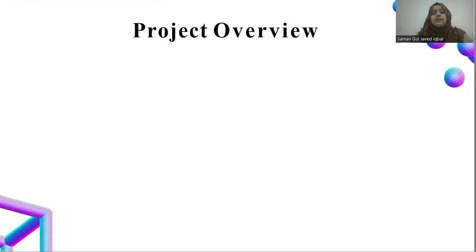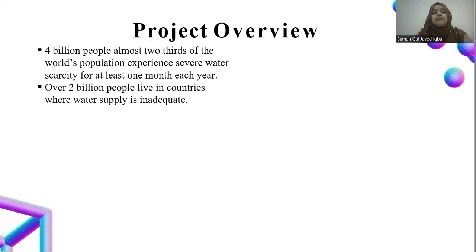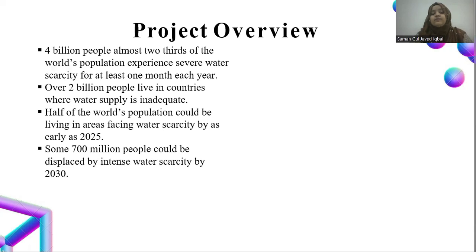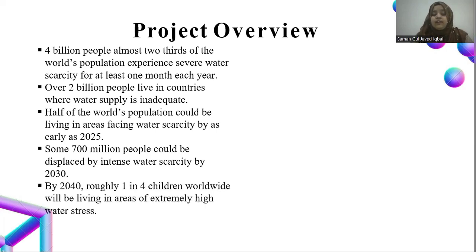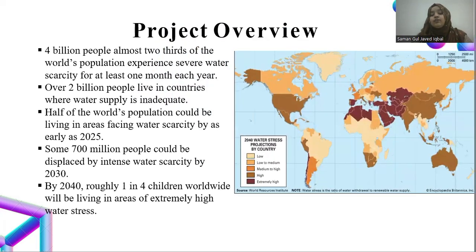Let's begin with the project overview. 4 billion people — almost two-thirds of the world population — experience severe water scarcity for at least one month each year. Over 2 billion people live in countries where water supply is inadequate. Half of the world population could be living in areas facing water scarcity by 2025, and some 700 million people could be displaced by intense water scarcity by 2030. By 2040, roughly one in four children worldwide will be living in extremely high water stress areas. As you can see in the graph, this is the figure of 2040 projections of worldwide water-scarce regions.